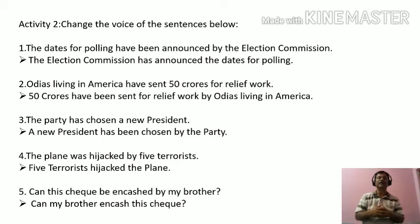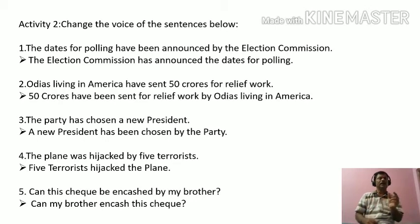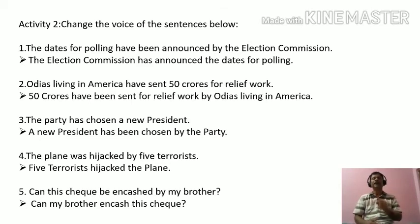Now the third sentence: 'The party has chosen a new president.' The verb structure is 'has plus V3', which is present perfect active. We have to change this into present perfect passive. The object is 'a new president'. 'What has the party chosen?' — a new president. 'A new president' becomes the subject of passive. As it is singular, it takes 'has', then 'been', then V3. V3 of 'choose' is 'chosen'. Answer: 'A new president has been chosen by the party.'